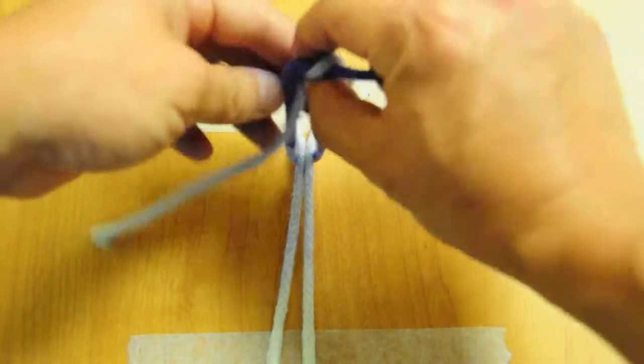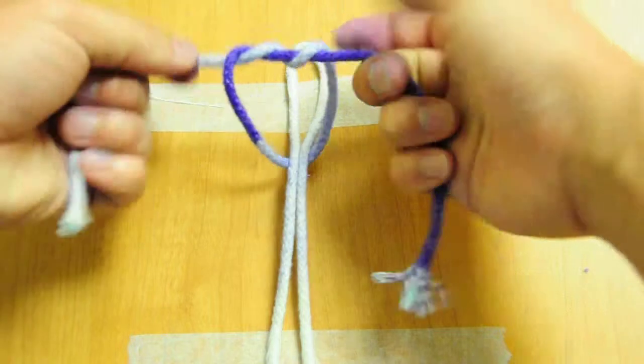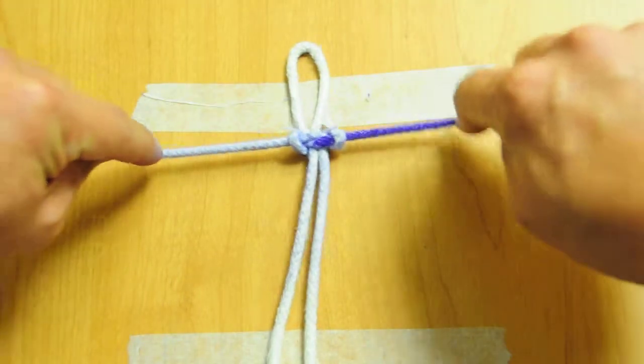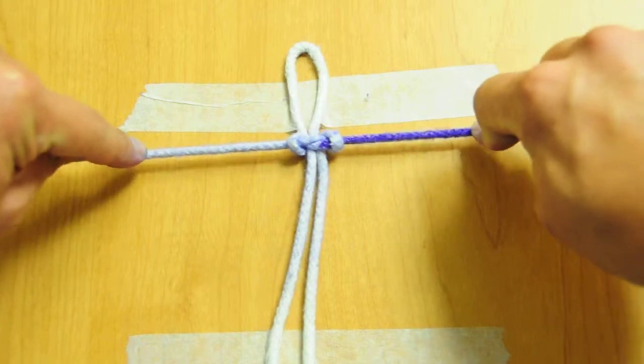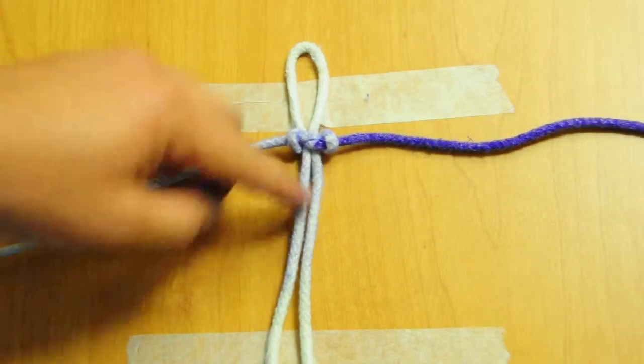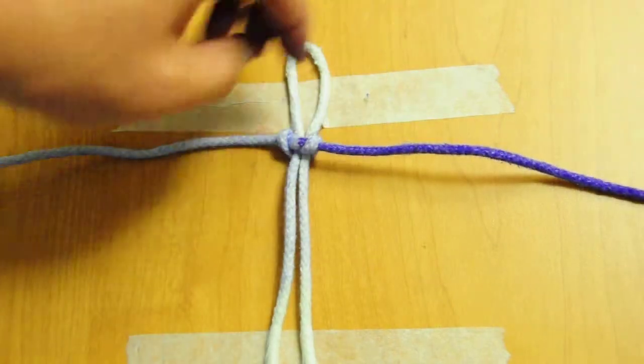Say I do a regular surgeon's knot, tension it down. No matter how hard I pull on that, because the size of the knot is so big compared to the pedicle I'm tying, it's going to slide, it's going to slip.